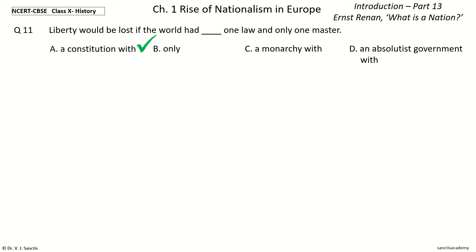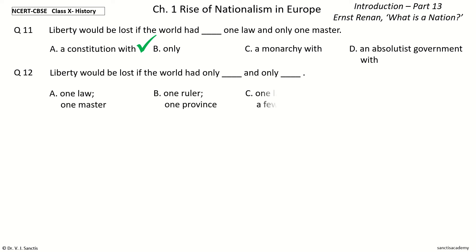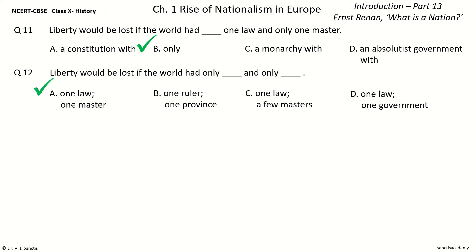Last question 12. Liberty would be lost if the world had only dash and only dash. The options are: one law / one master, one law / one ruler, one law / one province, one law / a few masters, one law / one government. And the answer is one law and one master. So, liberty would be lost if the world had only one law and only one master.